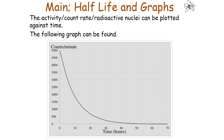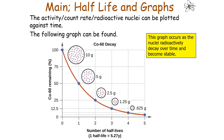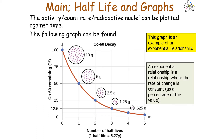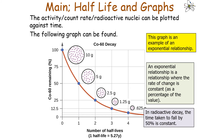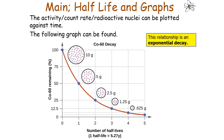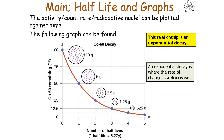As well as doing calculations mathematically, the activity, count rate, or number of radioactive nuclei can be plotted against time to produce a graph. This graph occurs as nuclei radioactively decay over time and become stable. It is an example of an exponential relationship, where the rate of change is constant as a percentage of the value. In radioactive decay, the time taken to fall by 50% is constant each time — this is an exponential decay because it decreases by 50% each time.